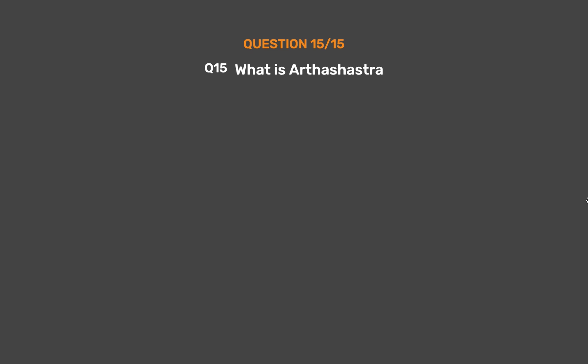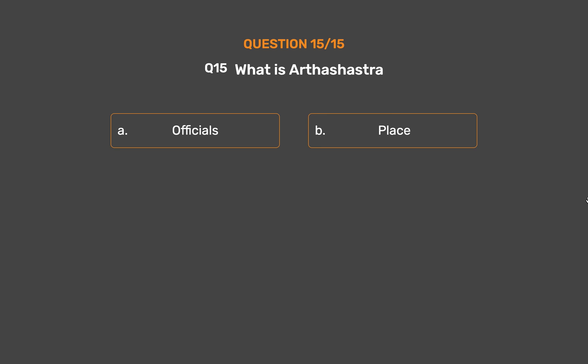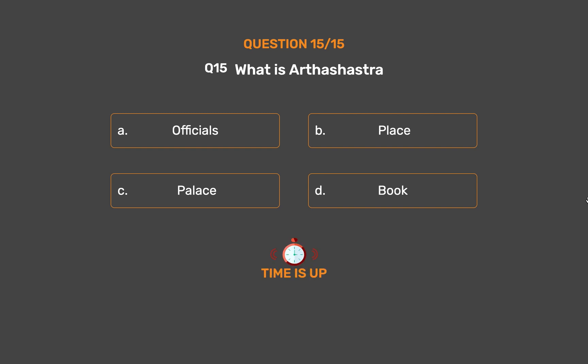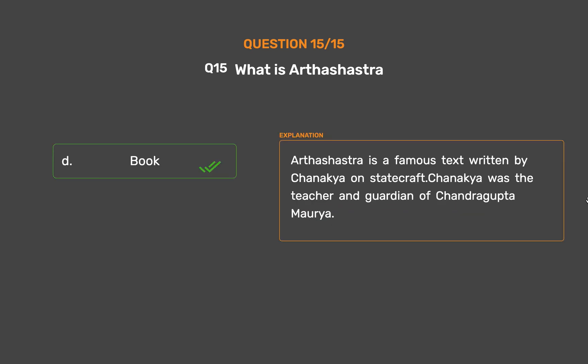Question No. 15. What is Arthashastra? Option A: Officials. Option B: Place. Option C: Palace. Option D: Book. The correct answer is Option D: Book. Arthashastra is a famous text written by Chanakya on statecraft. Chanakya was the teacher and guardian of Chandragupta Maurya.